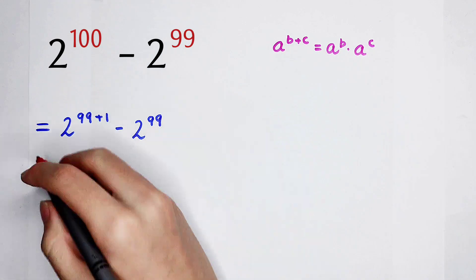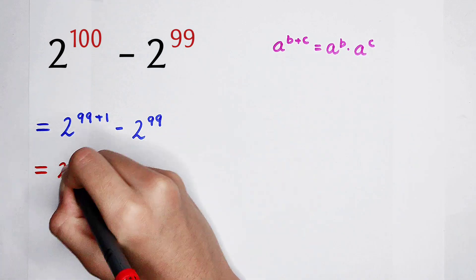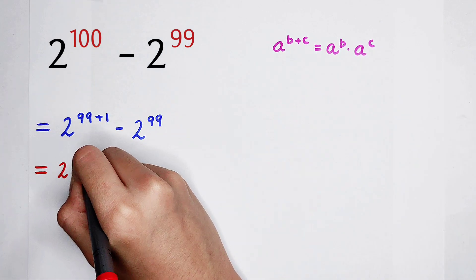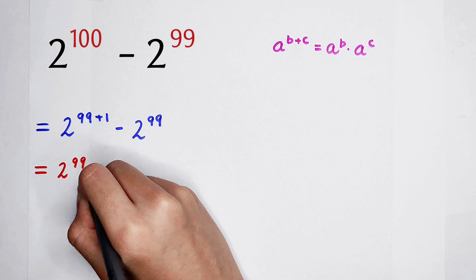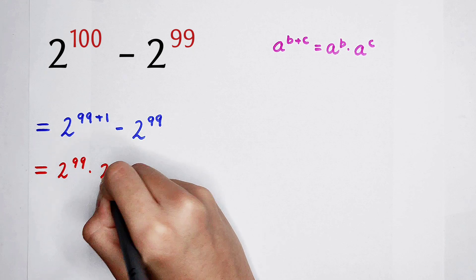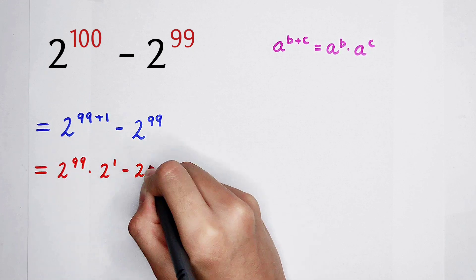So using this formula, it can be written as 2 to the power of 99, times 2 to the power of 1, and then minus 2 to the power of 99.